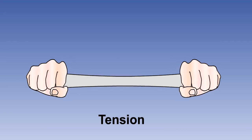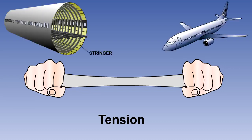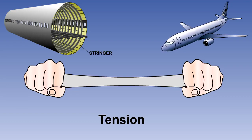A tensile load is one which tends to stretch a structural member. The member is then said to be under tension. Components designed to resist tensile loads are known as ties. Good examples of ties are the stringers, which in modern aircraft take the tensile loads produced in the fuselage structure by pressurization.